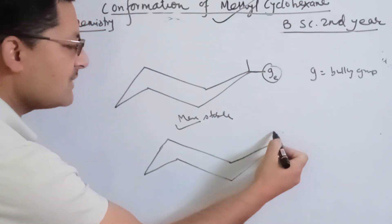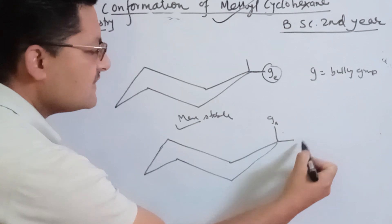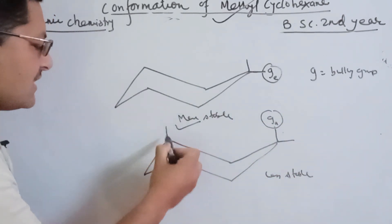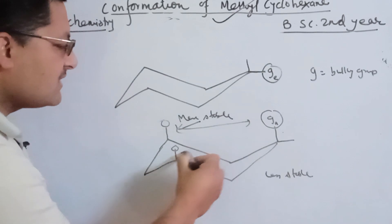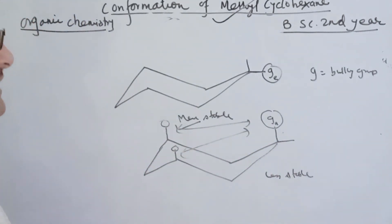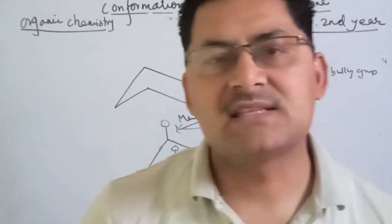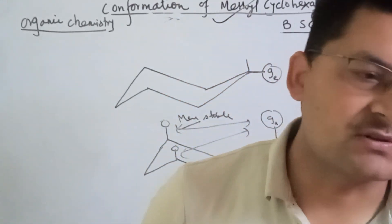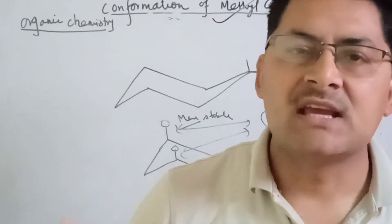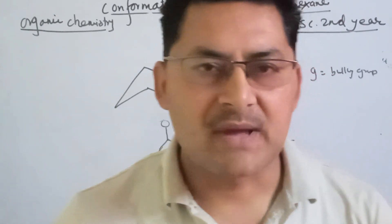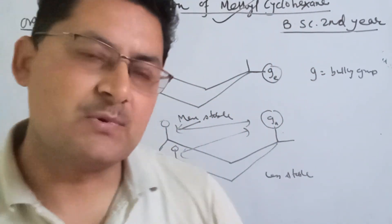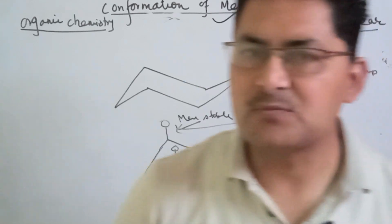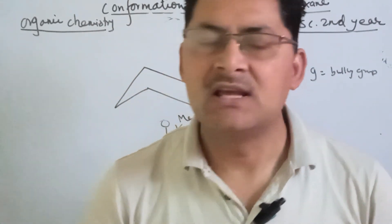The G group is less stable in the axial position. The bulky group is less stable in the axial position and more stable in the equatorial position. I will show you how to confirm the axial and equatorial positions and explain their stability.